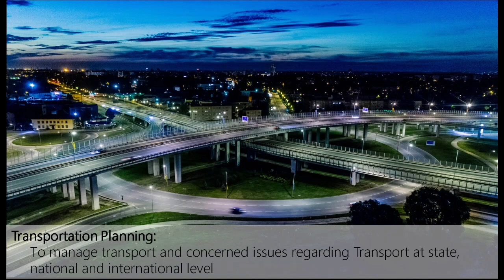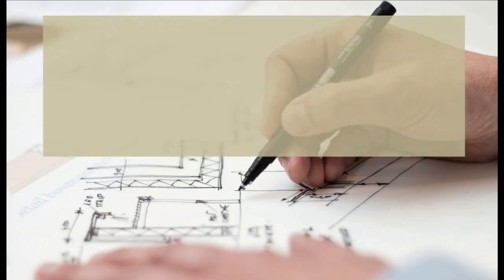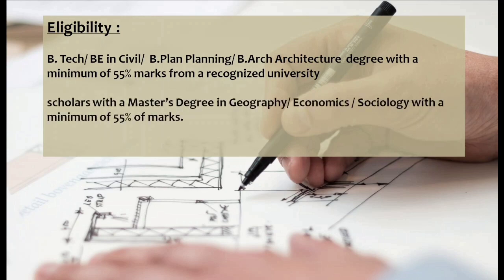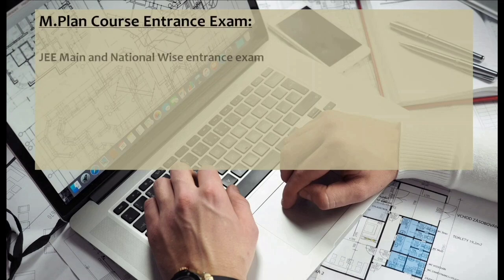Eligibility for this course: students with B.Tech, B.E. in Civil, B.Plan in Planning, or B.Arch in Architecture degree with a minimum of 55 percent marks from a recognized university are eligible for admission to this course. Certain universities also allow scholars with a master's degree in Geography, Economics, or Sociology from a recognized university with a minimum of 55 percent marks.